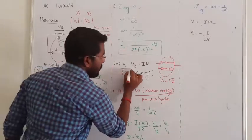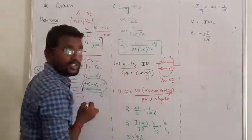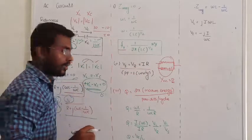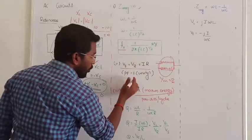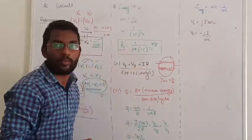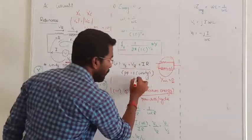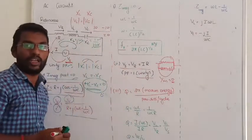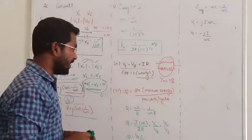At resonance, the voltage is going to be dropped across the resistor. Resonance voltage is dropped across the resistor — these are the fuel resistors. The power factor at resonance is unity.